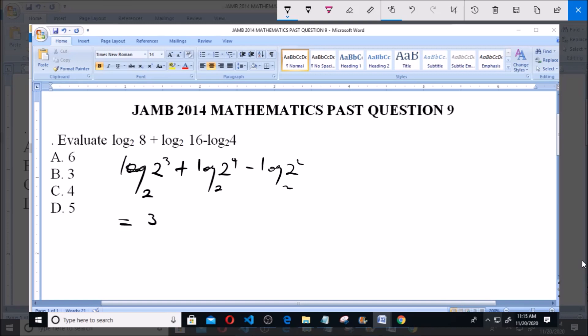This equals 3 log 2 base 2 plus 4 log 2 base 2 minus 2 log 2 base 2.